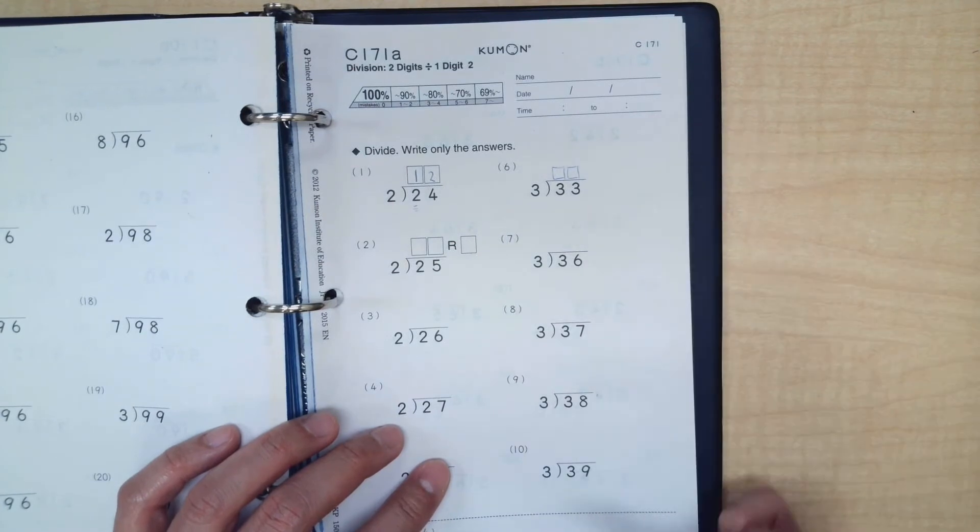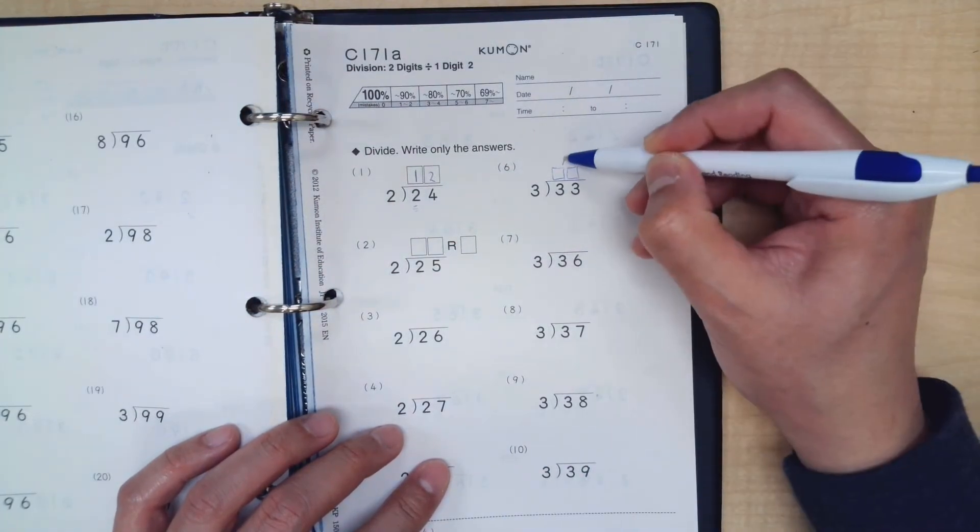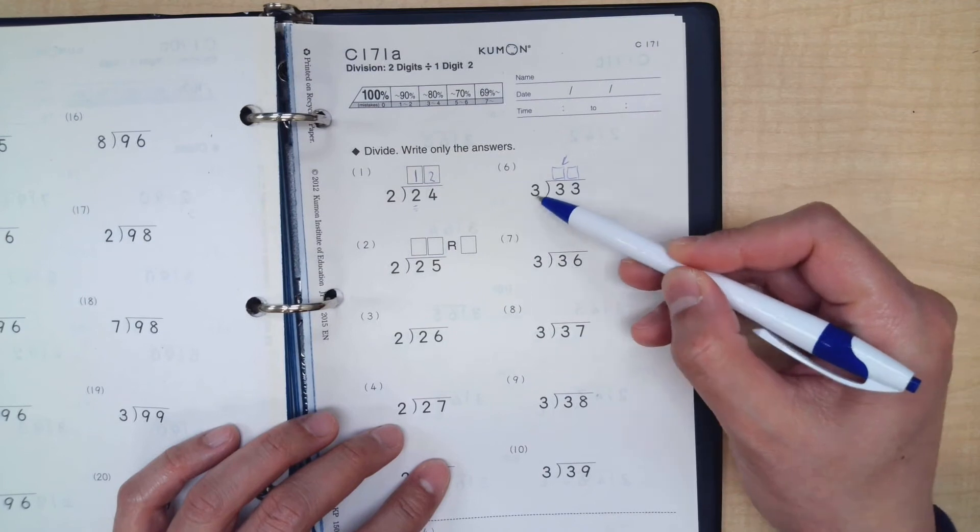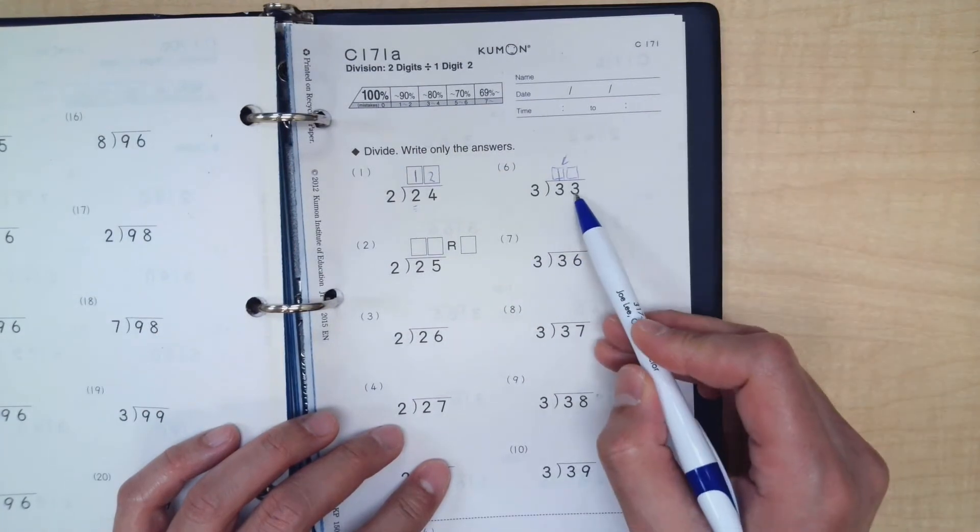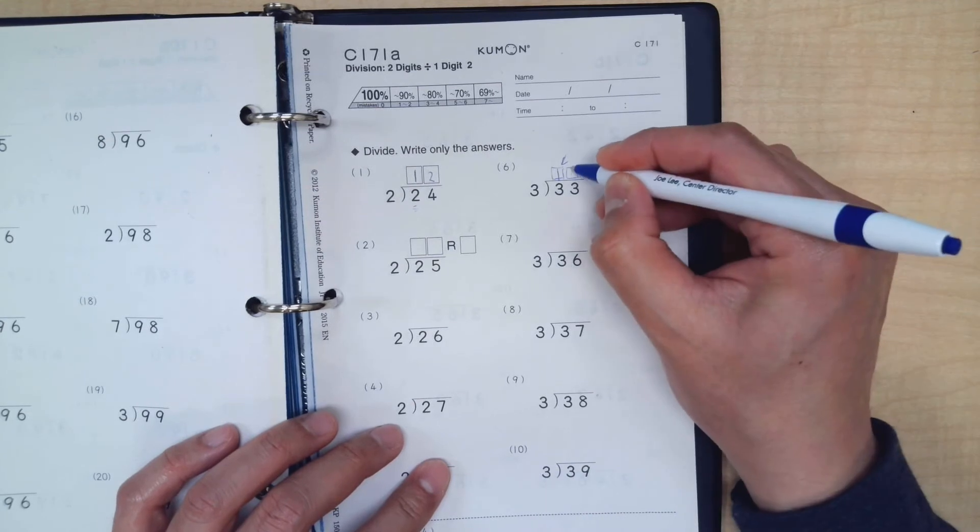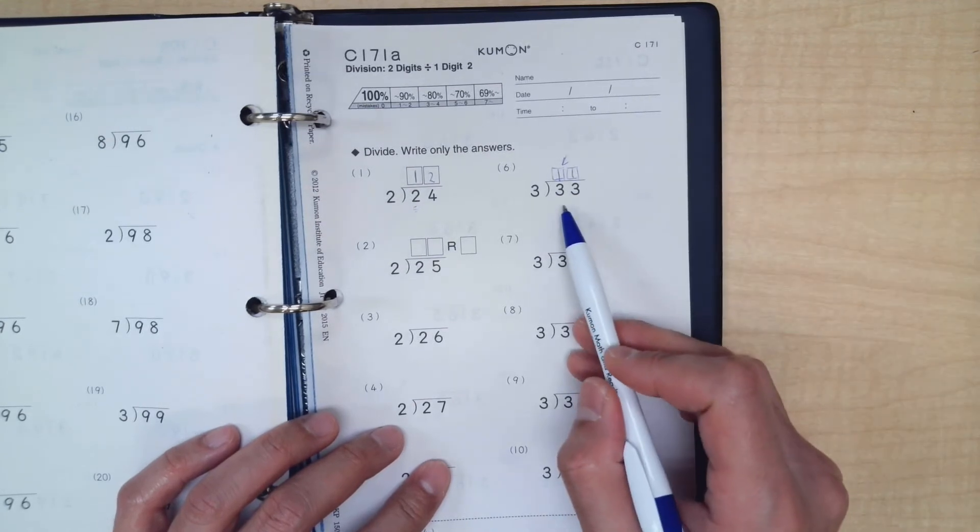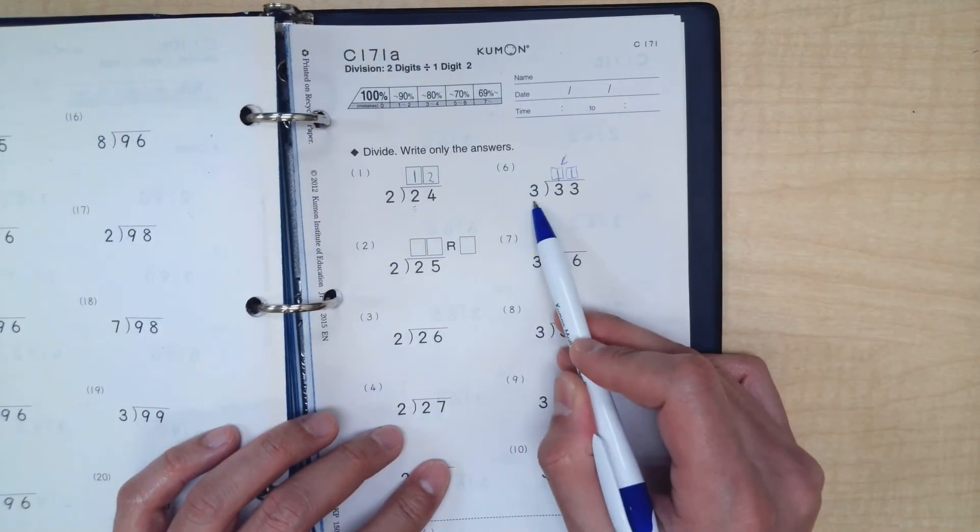What about number six? Let's start with this first space again. What's three divided by three? It is one. And what is another three divided by three? It's one. So the answer to the question, thirty-three divided by three is eleven.